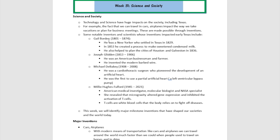There was a guy called Gail Borden. He lived between 1801 to 1874. He was a New Yorker, but he finally settled in Texas in 1829. In 1853, he created a process to make sweetened condensed milk. He also helped to plan the cities of Houston and Galveston. So think about downtown Houston, midtown Houston, Galveston — Gail Borden contributed to some of those plans.